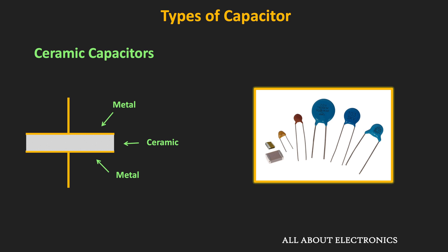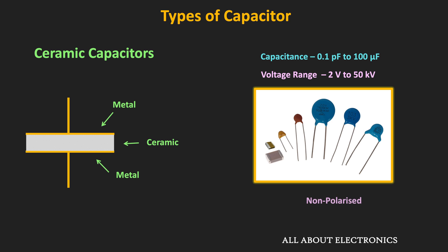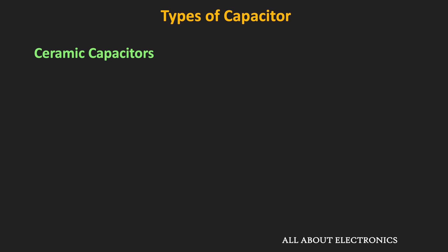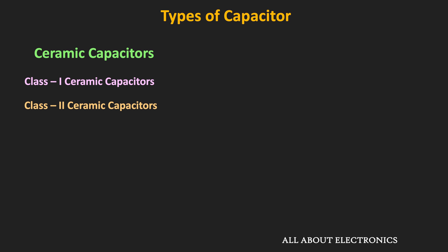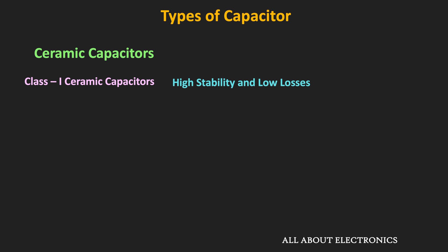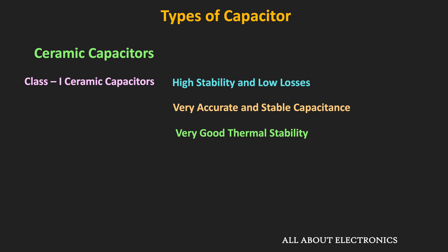The next type of capacitor is the ceramic capacitor. In ceramic capacitors, the dielectric material is ceramic. They are available in lead form as well as surface mount form, in a wide capacitance and voltage range. Unlike electrolytic capacitors, they are non-polarized. There are two types: class 1 and class 2 ceramic capacitors. Class 1 ceramic capacitors are used in circuits where high stability and low losses are required. They are very accurate and provide stable capacitance even with changes in temperature, biasing voltage, or frequency.